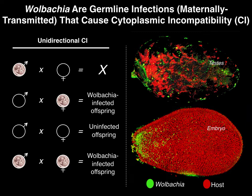Why does Wolbachia cause this? It's a maternally inherited infection. Two-thirds of the offspring will be Wolbachia infected in the next generation when the infection frequency starts at 50% — so it goes from 50% to 66% just by reducing the fitness of uninfected females. Every generation, the infection ratchets itself to fixation because it's continually reducing the fitness of uninfected females.